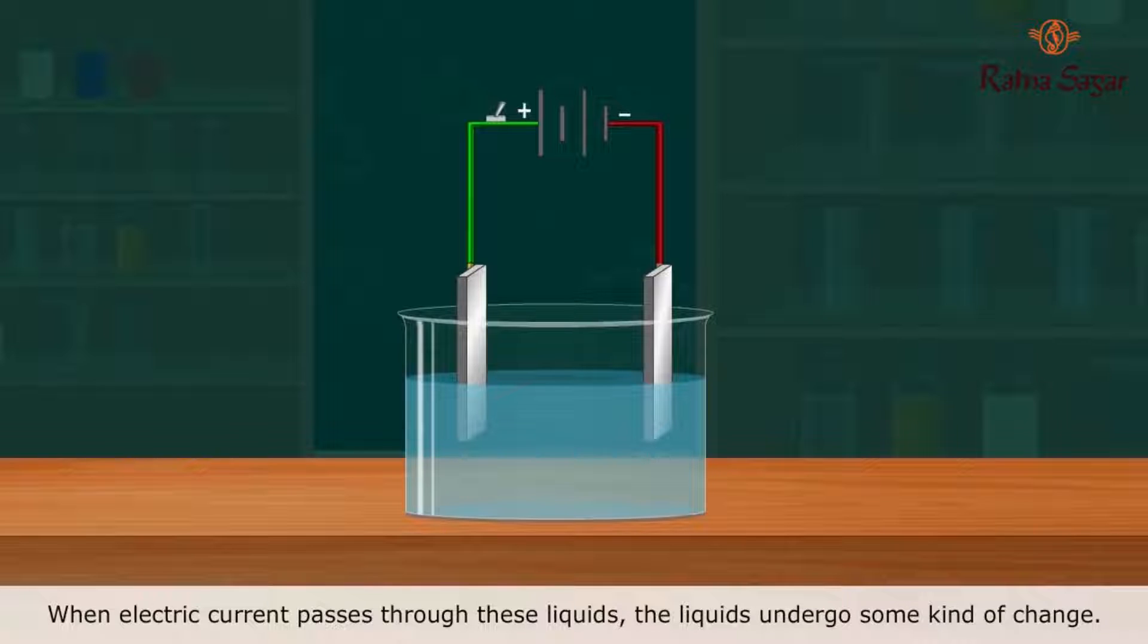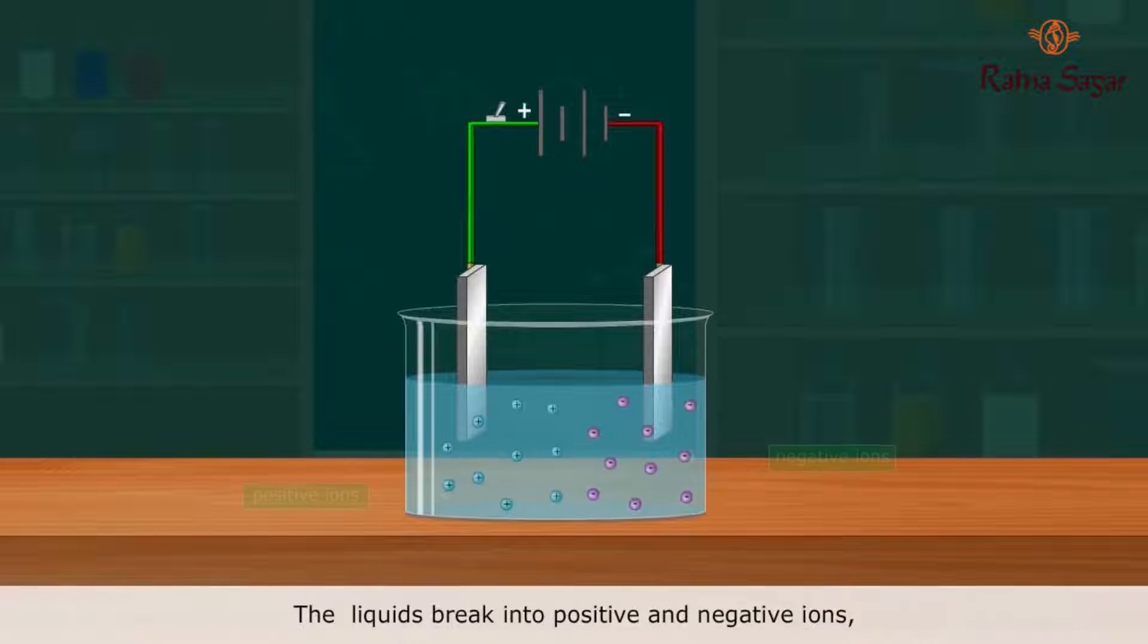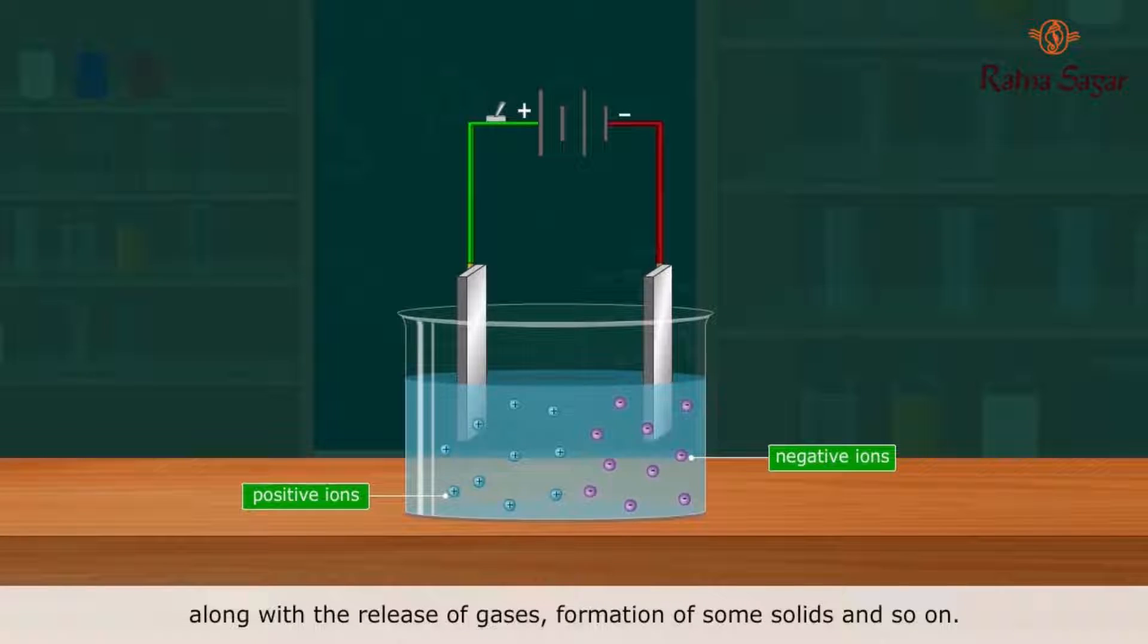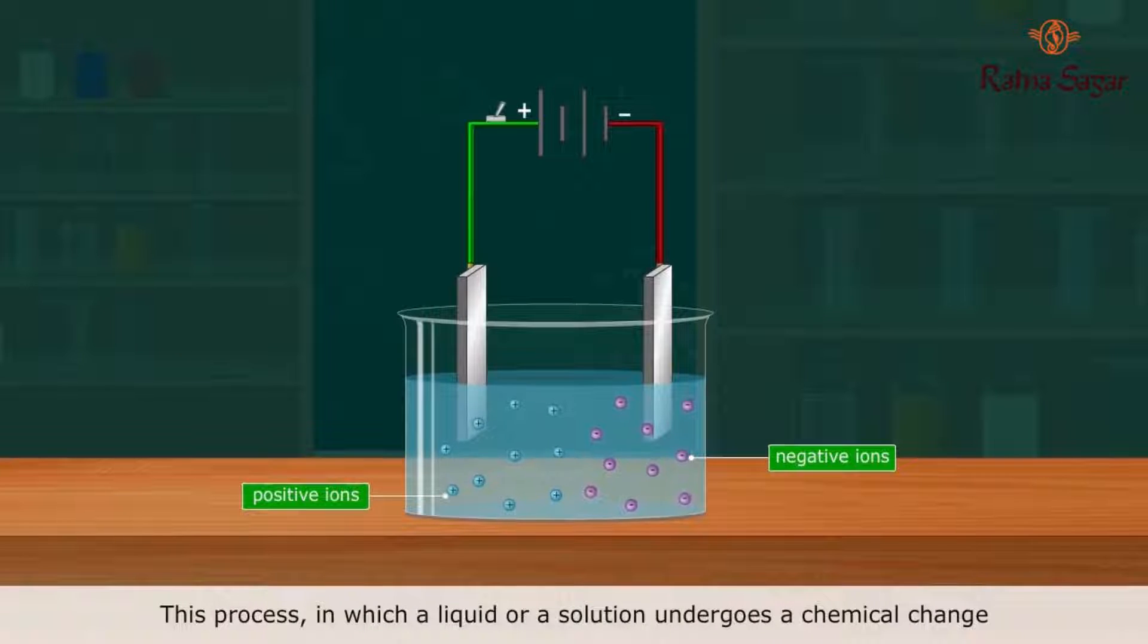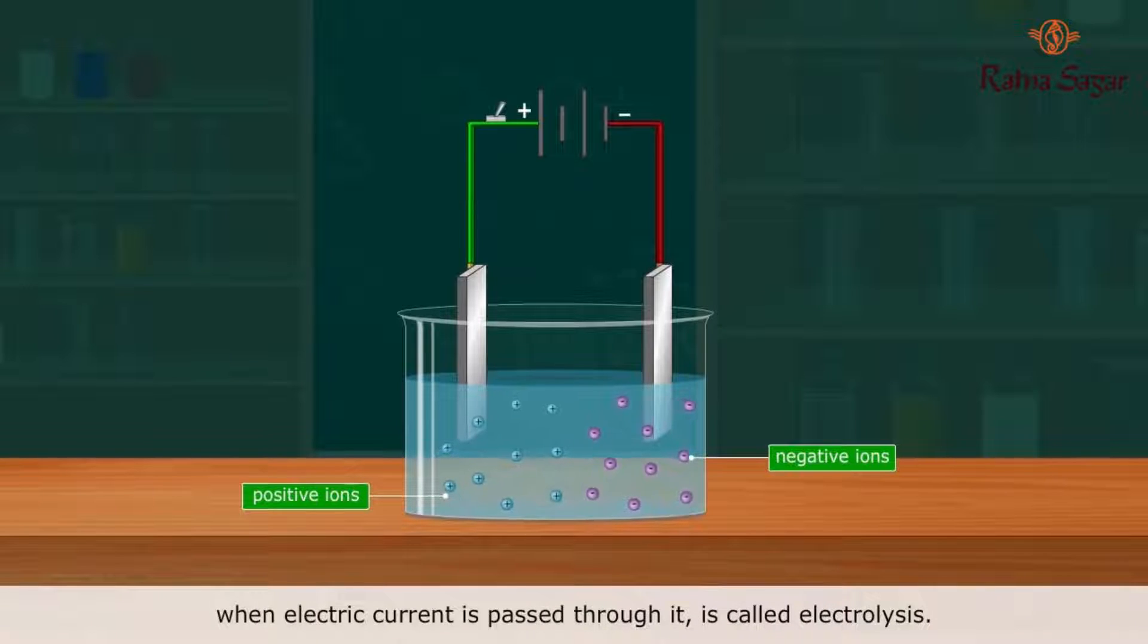the liquids undergo some kind of change. The liquids break into positive and negative ions, along with the release of gases, formation of some solids, and so on. Thus, we can say that electric current also has a chemical effect. This process in which a liquid or a solution undergoes a chemical change when electric current is passed through it is called electrolysis.